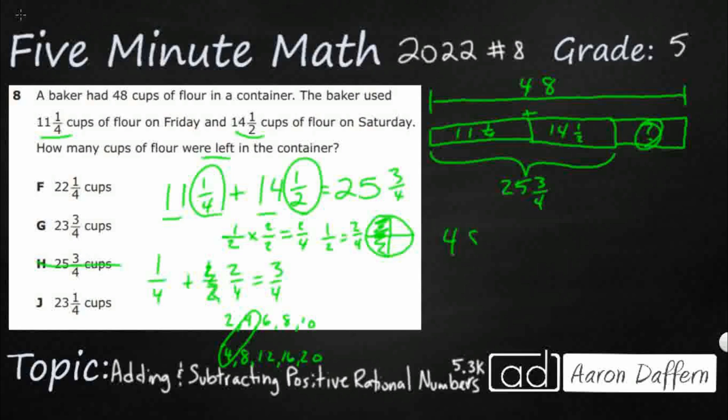So really what I've got is I've got 48 minus 25¾. Now I could try to subtract the 48 and the 25, but I need to take care of my fractions first.